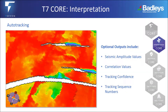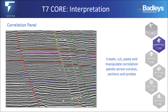T7Core provides the user with a wide range of interpretation tools, including the ability to auto-track seismic horizons in both 2D and 3D. Create, cut, and paste correlation panels across surveys, sections, and probes.